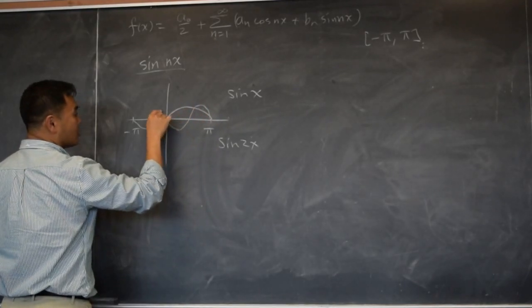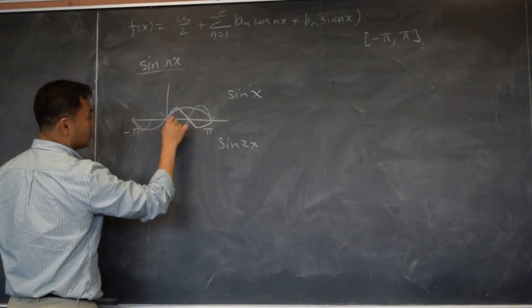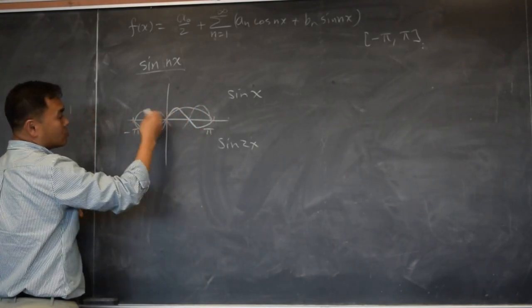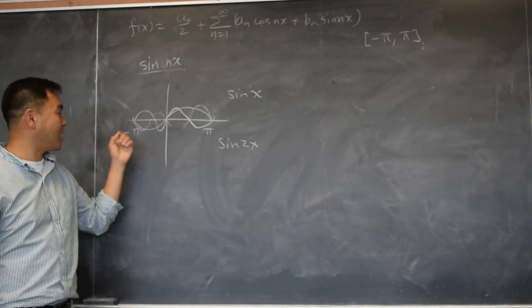It doubles, right? Actually, it's the opposite. Sorry. So sine x fits one period inside negative pi to pi.